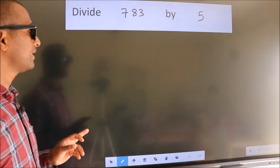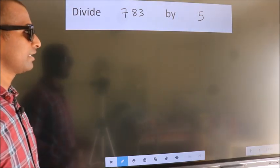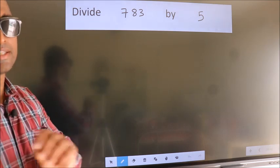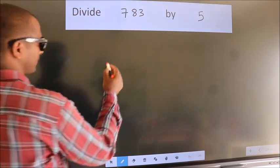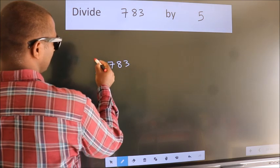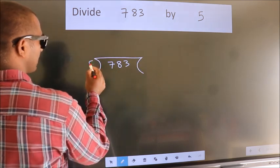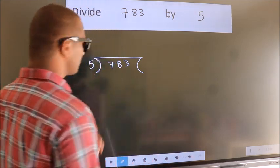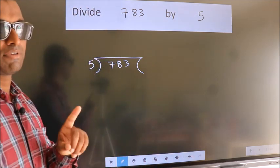Divide 783 by 5. To do this division, we should frame it in this way. 783 here, 5 here. This is your step 1.